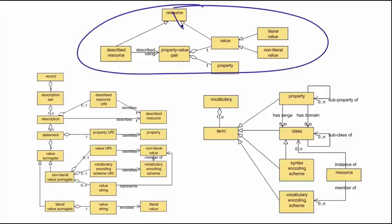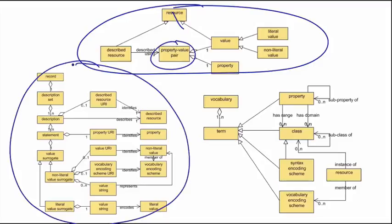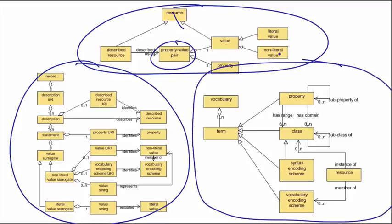A resource is described using a property value pair. The second diagram shows us that description is encoded in a vocabulary, and then this third diagram here shows how terms in a vocabulary are encoded.